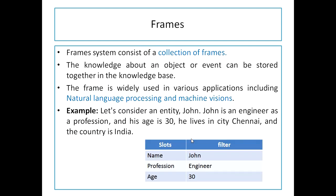The frame-based approach uses a collection of frames; each frame consists of attribute-value pairs of an object stored in the knowledge base. This is widely used in natural language processing and machine vision. For example, consider the object John: his profession is engineer, age is 30, he lives in Chennai, country is India. We create a frame representation as a table where slots store attributes — name, profession, age, country — and the fillers on the right-hand side store the actual values: John, engineer, 30, India.